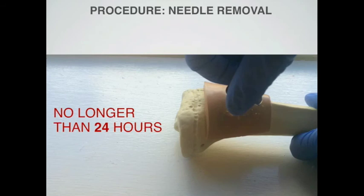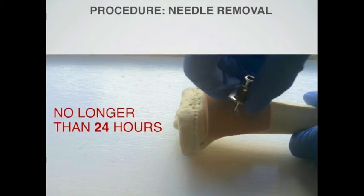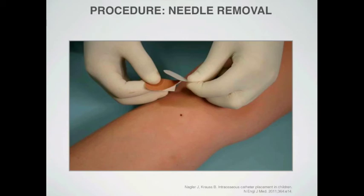The procedure to remove the IO needle is very simple. Most manufacturers recommend that needles be removed within the first 24 hours; however, there is literature describing their use over several weeks without complications. Nevertheless, in normal circumstances your goal is to replace IO access with a more permanent solution after successful initial resuscitation. As with insertion, when removing the IO needle, do not pull it straight up but use circular motion. A useful tip is to attach a syringe to the needle and rotate them together while gently pulling upwards. After removal, inspect the needle to ensure it is intact, then place a simple dressing or band-aid over the insertion site.